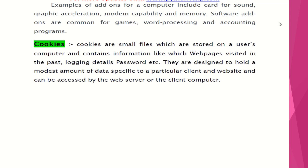Next are cookies. Cookies are small files stored on a user's computer that contain information such as which web pages were visited in the past and login details like passwords. They are designed to hold a modest amount of data specific to a particular client and website, and can be accessed by the web browser or the client computer. This concludes the introduction to computer networks. Thank you, students.